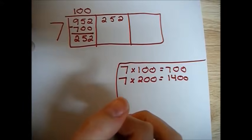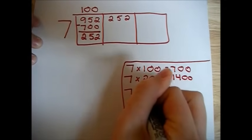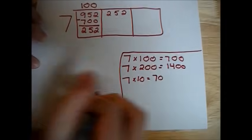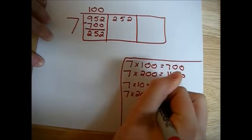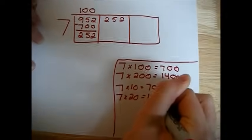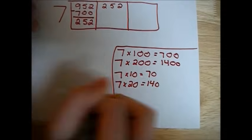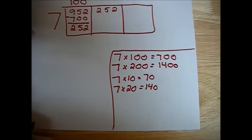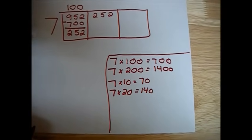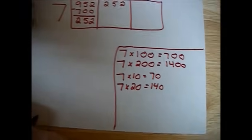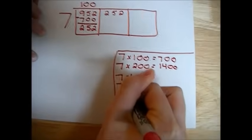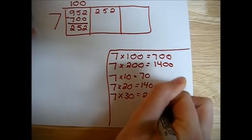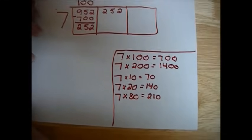So we start with 7 times 10, which gives us 70. Then we move on to 7 times 20. Now remember, when multiplying a number times a tens, you just take that number times the other number, so in this case 7 times 2, and you add the 0 onto the end. So 7 times 2 is 14, giving us 140 after we add the 0. We could probably go larger than that. Let's try 3. 7 times 30 is 210.